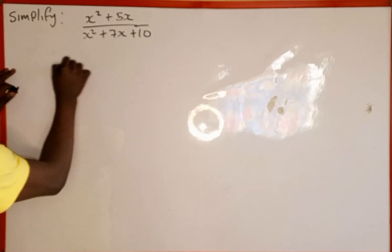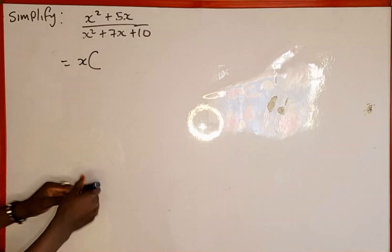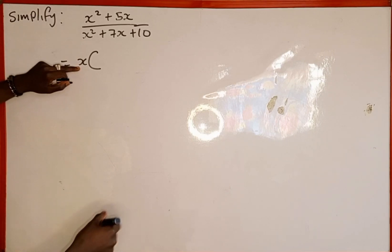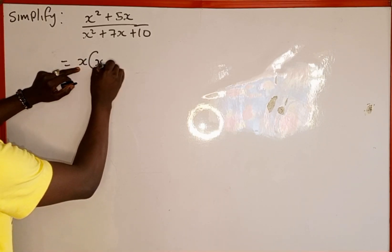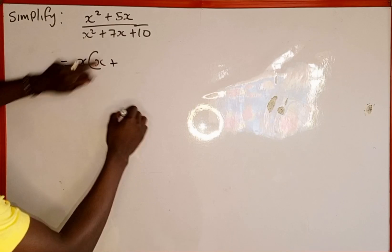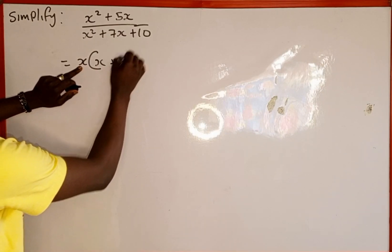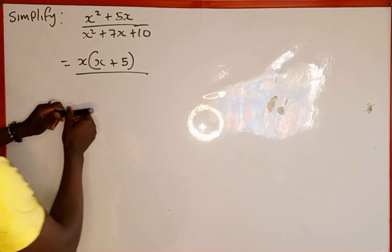So we factor out x, then we open bracket. Now we are going to divide. x squared divided by x is going to remain only x, then plus 5x divided by x is going to remain only 5. Then everything all over.